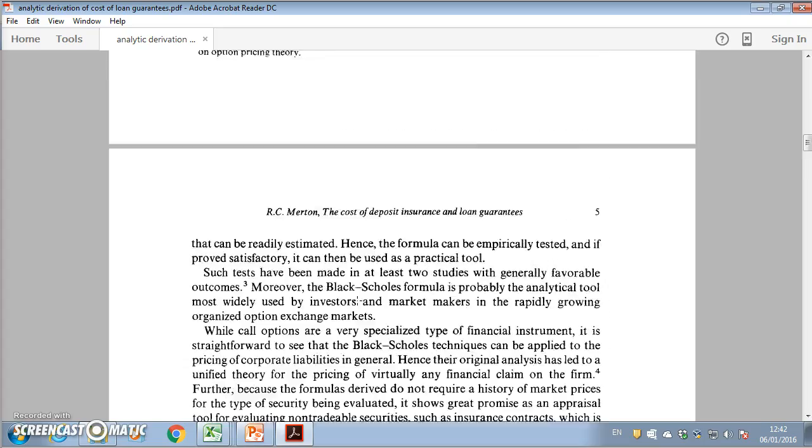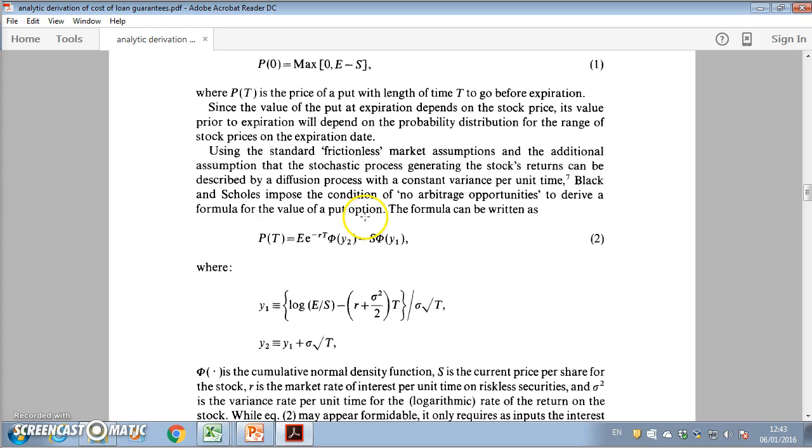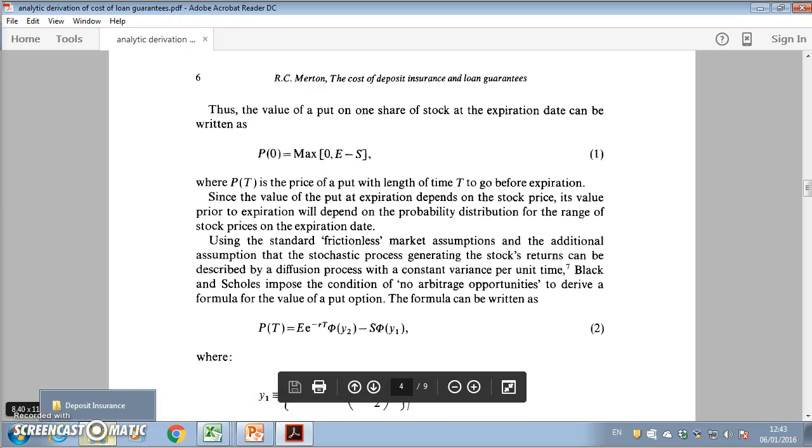Merton sets out an option framework and notes that a put option is a type of guarantee protecting against a drop in the value of an asset. At its most basic, a put option equals the difference between some fixed level and an asset price. If the asset price falls below a given level, the put option serves to protect against drops in asset prices.